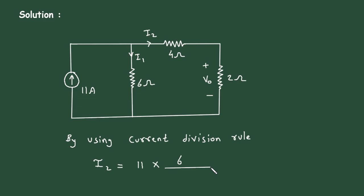So it will be 6 divided by 6 plus this total resistance, that is 4 plus 2.